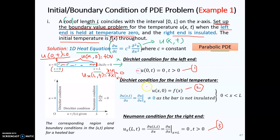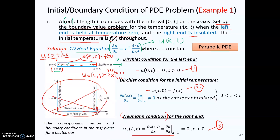When you have the condition on the temperature only at the two ends of the bar, this is specifically called the Dirichlet condition. If you have the condition on the first derivative component, we call this the Neumann condition, which is applied at the right end here. You do not need to memorize the names. Most importantly, you can visualize the problem from the statement and form the three equations for the initial condition and boundary conditions.